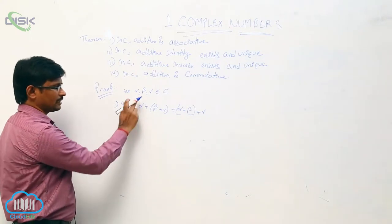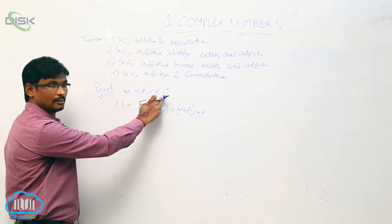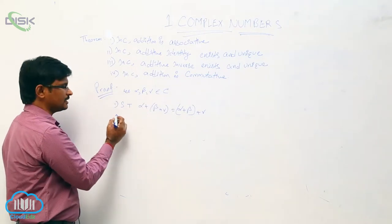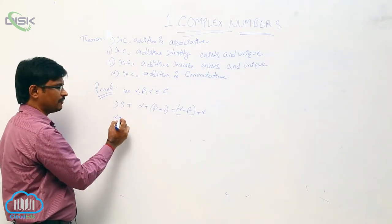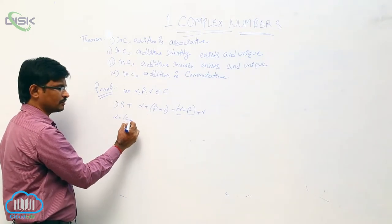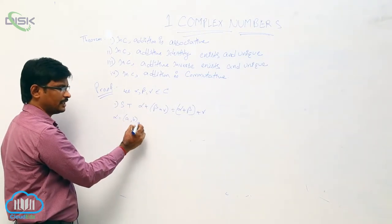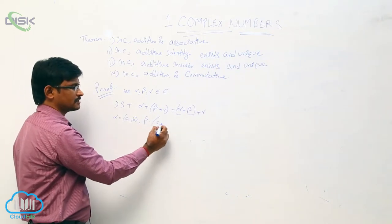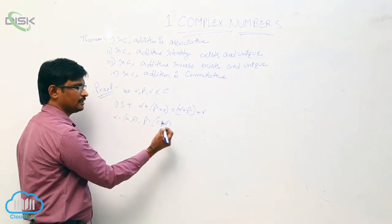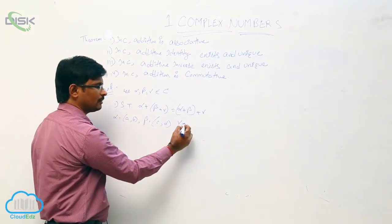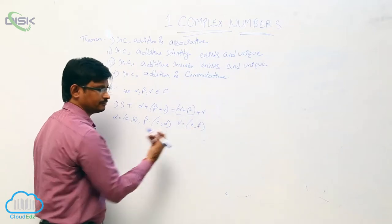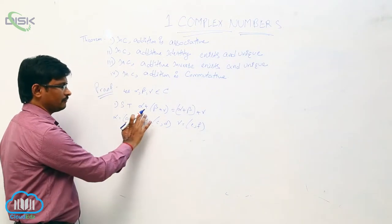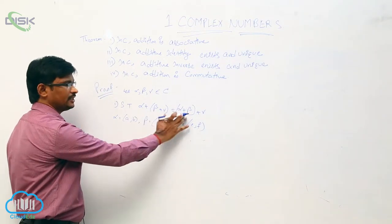So, alpha, beta, gamma belong to complex numbers. Consider alpha equal to (a, b), beta equal to (c, d), and gamma equal to (e, f).